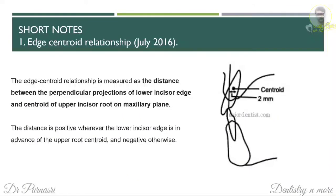The short note is edge-centroid relationship. We take the incisal edge of the lower incisor and mark the centroid of the upper central incisor. The centroid is found by drawing the long axis of the upper incisor and marking the midpoint of the root along that axis. The relationship between the edge of the lower incisor and the centroid of the upper incisor is called the edge-centroid relationship. Normally, the lower incisal edge is 2 mm ahead of the upper centroid. The distance is positive when the lower incisal edge is ahead of the upper root centroid, and negative if it is behind.